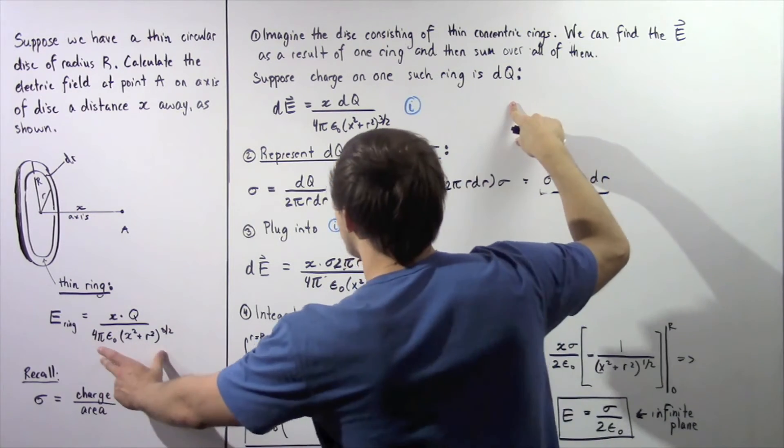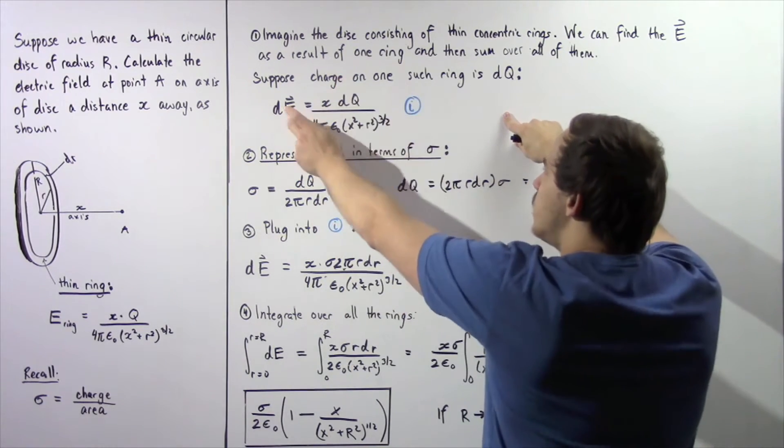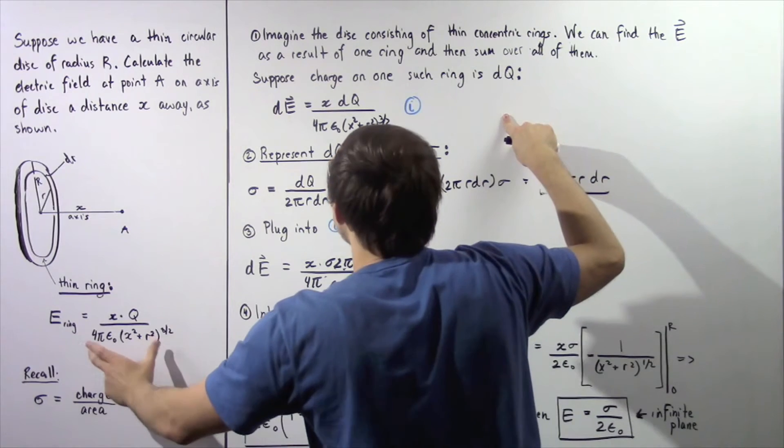Well, the electric field given by this equation would be dE is equal to x multiplied by dq divided by this same denominator.